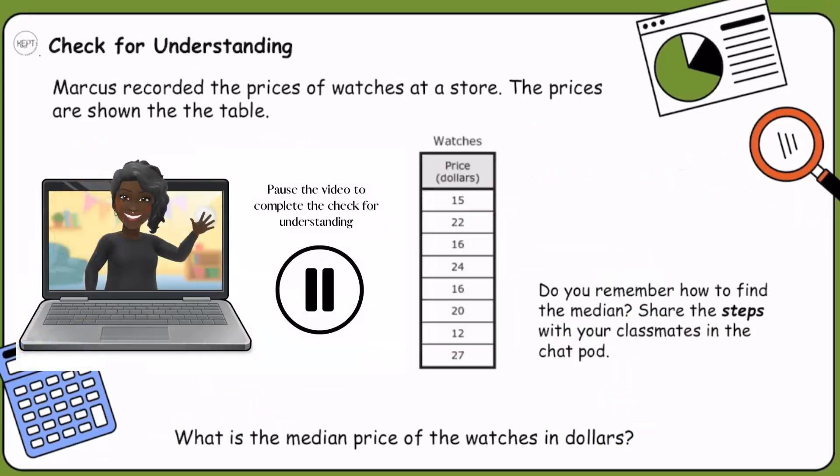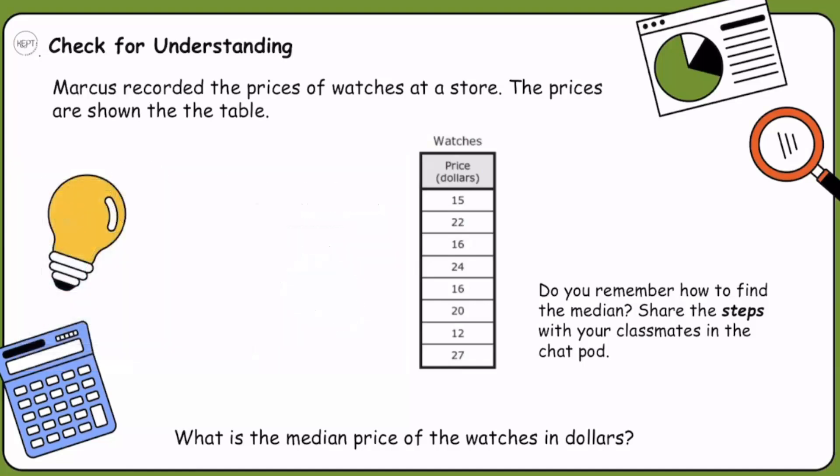Now, I would like you to pause the video here, and I want you to try this check for understanding. The problem says, do you remember how to find the median? Hopefully, you remember that we need to make sure our numbers are lined up from least to greatest, and that the median is that middle number. That middle number can be an average if we have to add more than one number together. What is the median price of the watches in dollars?